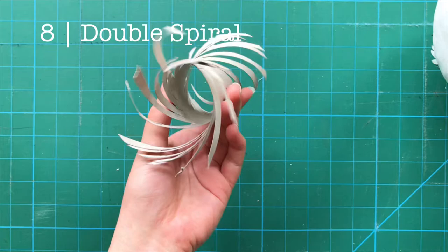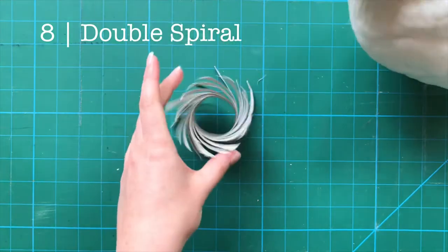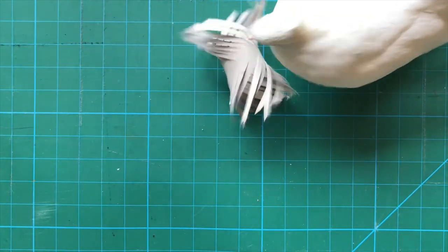Number eight, double spiral. Tallulah prefers it to be more dramatic by doing the same thing to the opposite side. This version is very springy and fun to interact with.